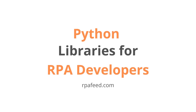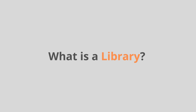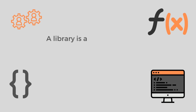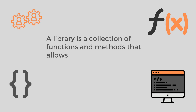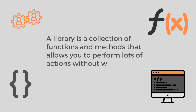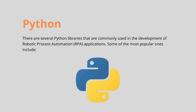First of all, let's understand what is a library. A library in Python is a collection of functions and methods that allows you to perform a lot of actions without writing your own code — basically reusable code. A library is a collection of functions and methods which are already predefined and built, so that you can directly use them without wasting effort to code and test that piece again.